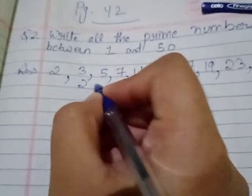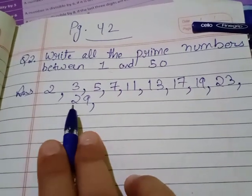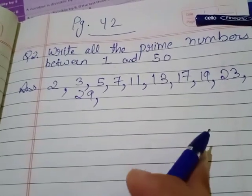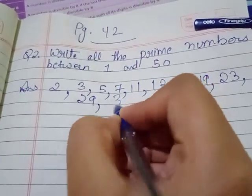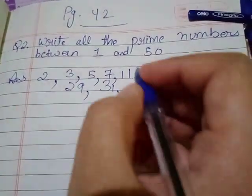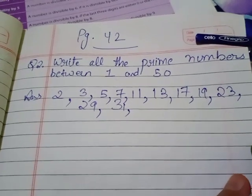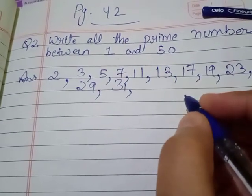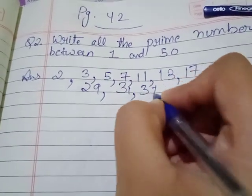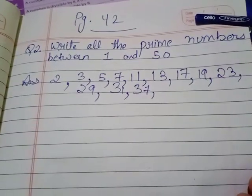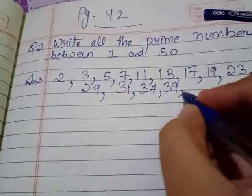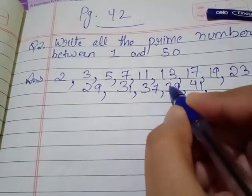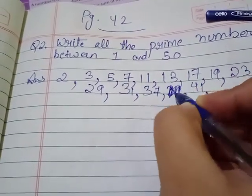What about 27? It is coming in the tables of 3 and 9, so it is not prime. 28 is also not prime. Then 29 is prime — because it doesn't come in any other table other than itself and 1. Then 31 is prime. 33 is not, because it is divisible by 11 and 3 both. 34 and 35 are not. 36 is not. Then 37 is prime. 39 is not prime — I'll cut that — because it is divisible by 3.